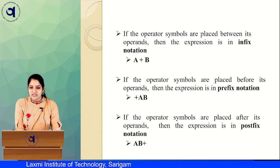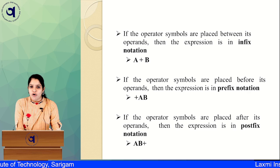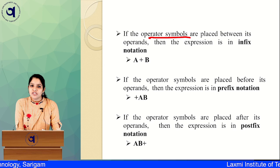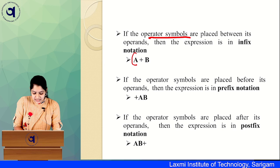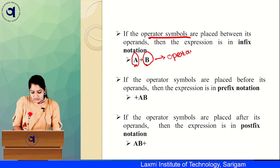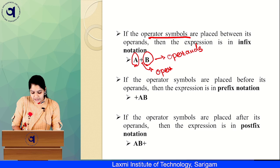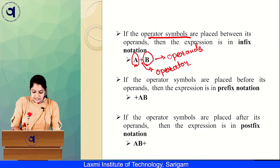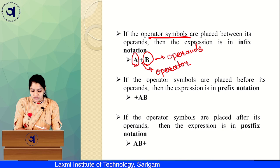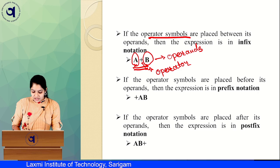Infix notation means: we have operands and operators in a mathematical expression. If the operator symbol is placed between two operands, then the expression is known as infix notation. For example, 'a' and 'b' are operands and '+' is the operator. Since '+' is placed in between 'a' and 'b', this is known as infix notation.